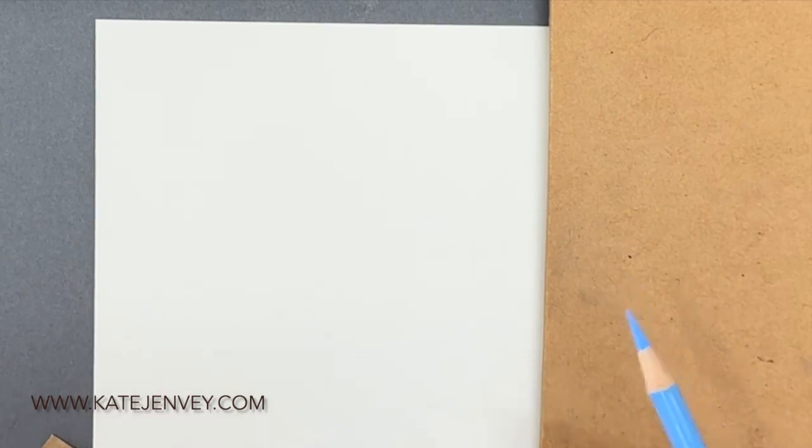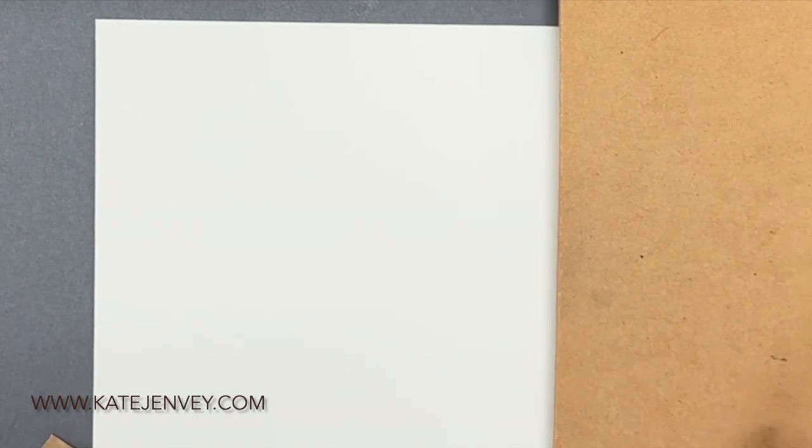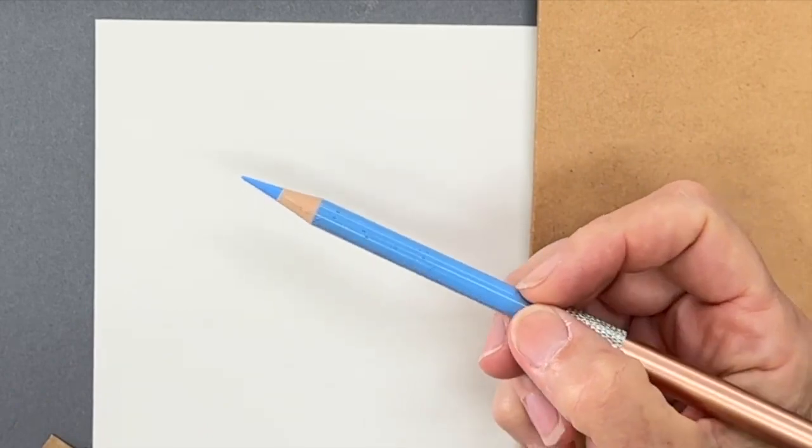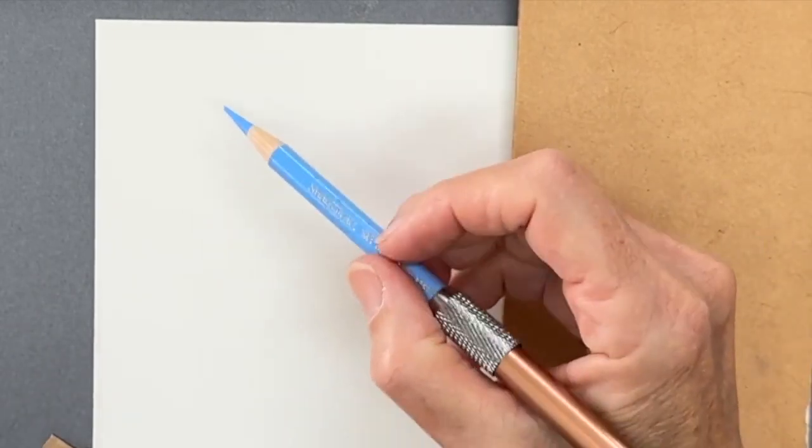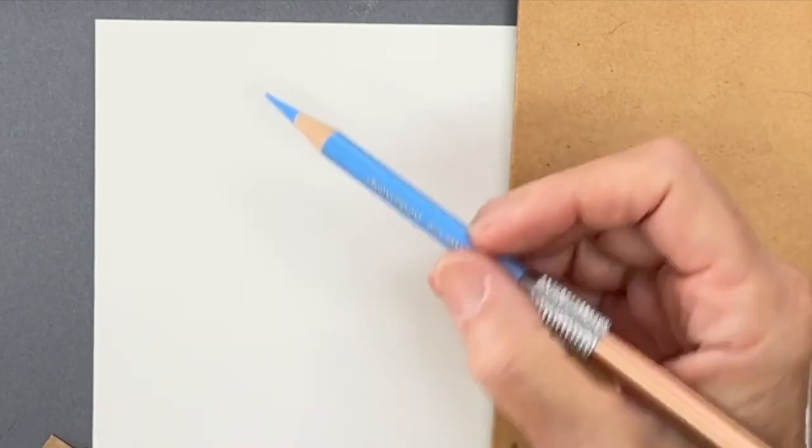This is a guideline of my technique. I'm using Polychromos and Arches hot-pressed watercolor paper at 300 GSM. I've got a slightly oval end on the pencil, and I picked sky blue because one of the smoothest things I encounter in my work, being mainly wildlife outdoors, is a beautiful blue sky.